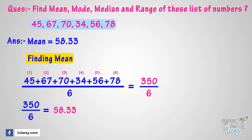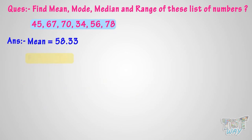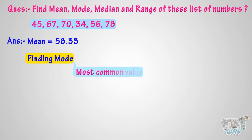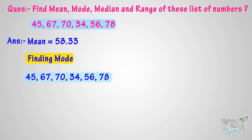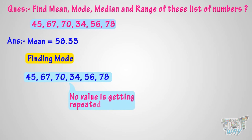Now let's find the mode. Mode is the most common value in the list of numbers. No value is repeated, so there is no mode for this list of numbers.